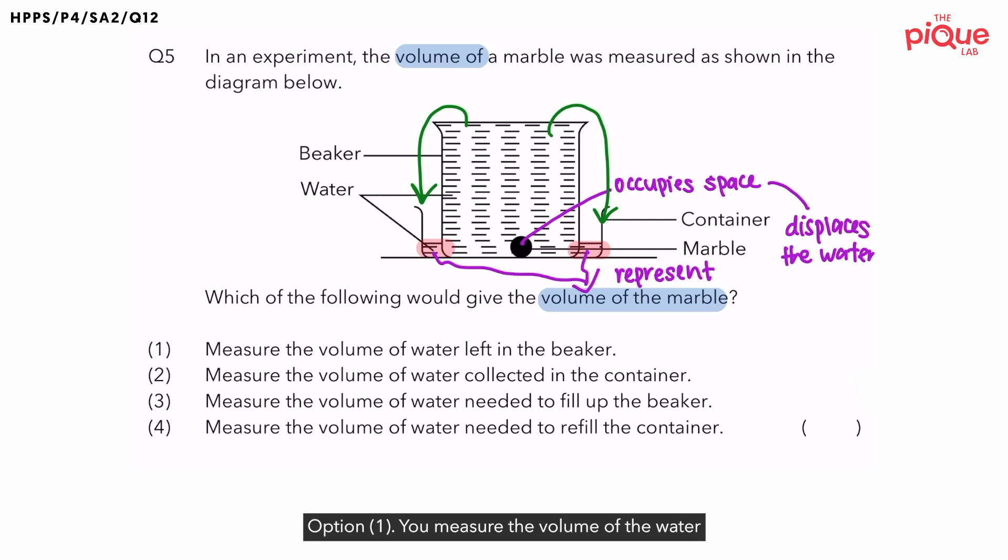So with that, let's read through the options. Option number one, you measure the volume of the water that is left in the beaker. Now is statement one correct? Remember, in order to find the volume of the marble, we should measure the volume of the water that is collected in the container itself. Hence, option one is wrong. It should be in the container instead. Now with that, let's look at option two. Measure the volume of the water collected in the container. Is this correct? Yes, this is correct.